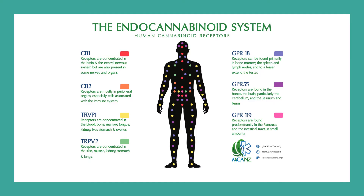Here is a slide from McAN New Zealand about cannabis awareness showing how pervasive the endocannabinoid system is. A lot of these receptors occur in organs, but many also occur in fatty tissues throughout the body. That makes sense — cannabis as a resin is non-polar, so it floods into those fatty tissues more than into watery parts of the body.